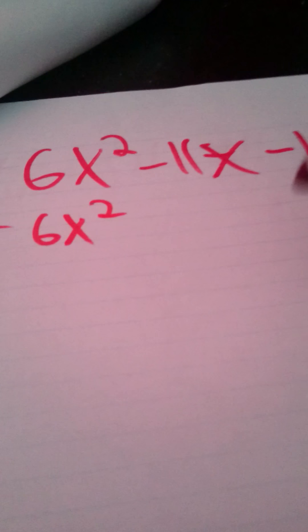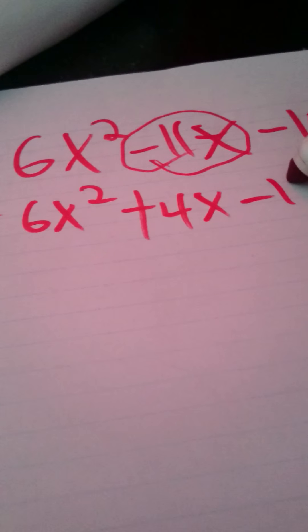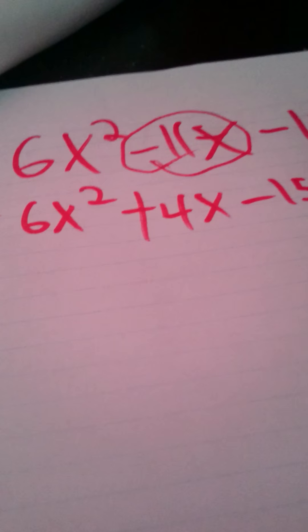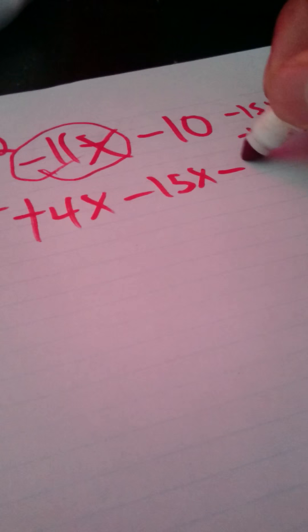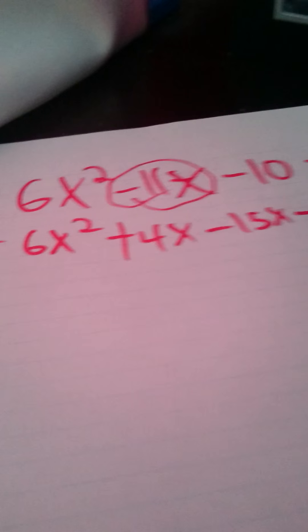So, what we will write here is we have 6x squared, and what we will do is substitute those two numbers — negative 15 and 4. We'll have positive 4x minus 15x minus 10.